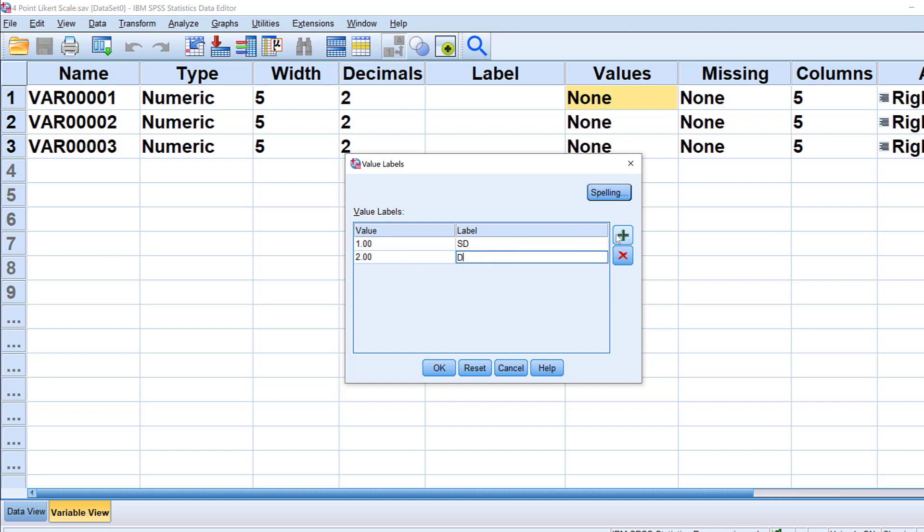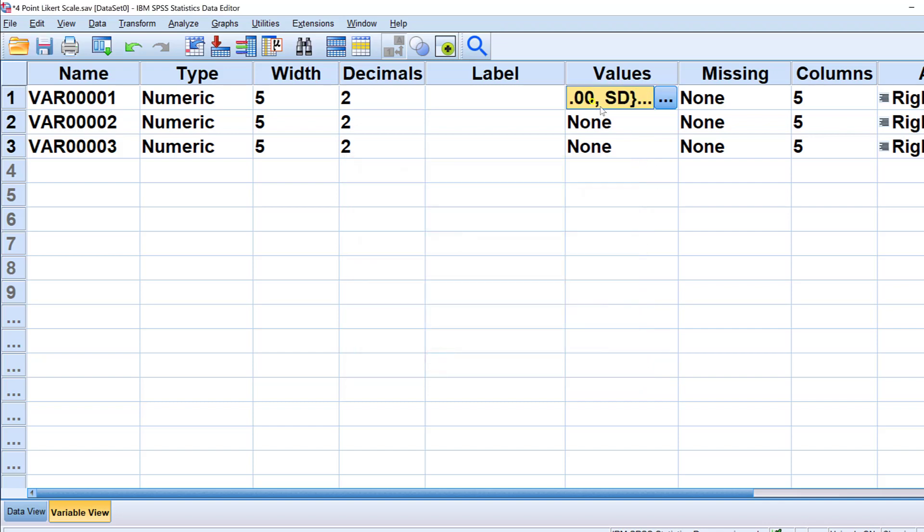Three as agree, because we don't have neutral—this is called the forced four-point Likert scale—and then four as strongly agree. So this is the code that can be pasted here and here, and these are the statements: item one, item two, item three.